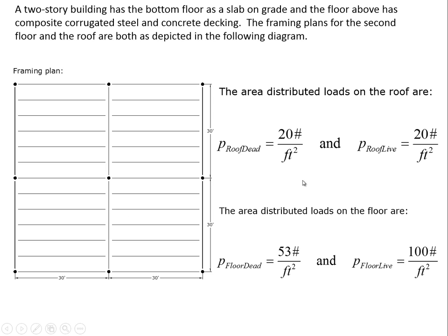Before we get into that, we need to specify some loads. P roof dead — the area distributed weight of the roof — we're going to take as 20 pounds per square foot. Typically we can design a lighter roof than that, but we may have unknown future loads to design for, so we'll never take less than 20 pounds per square foot for the roof dead load.